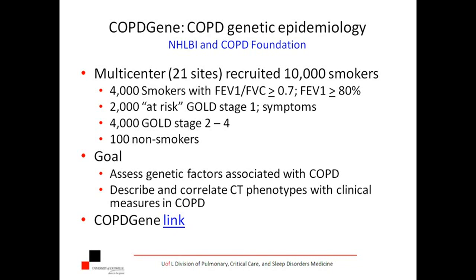They had 2,000 people who were at risk — they may have some symptoms suggestive of COPD, they present clinically as COPD, but they don't meet the hallmarks of the 0.7 ratio or the 80% cutoff. Then they had 4,000 GOLD stage 2 to 4 patients, which is really the bulk of the population we tend to see clinically — this is when people get sick enough to come to the doctor. They also included 100 nonsmokers for genetic comparisons.